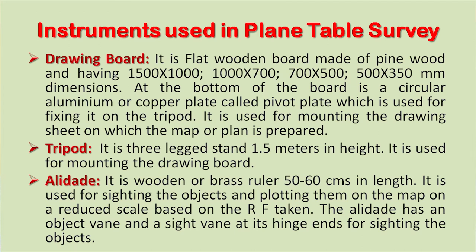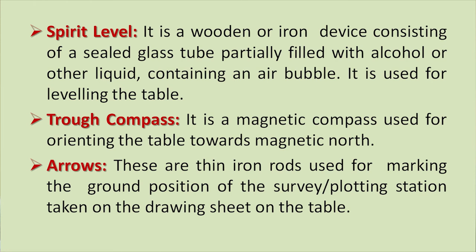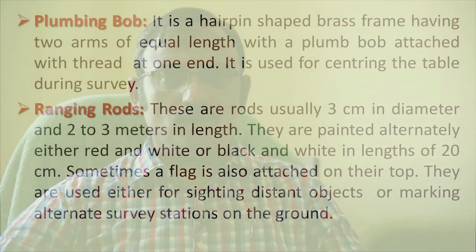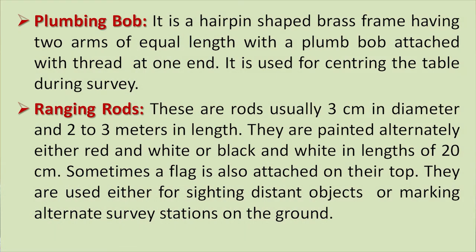The alidade has an object vane and a sight vane at its hinge ends for sighting the objects. Then we have the spirit level — a wooden or iron device consisting of a sealed glass tube partially filled with alcohol or other liquid containing an air bubble — used for leveling the table. Then the trough compass — a magnetic compass used for orienting the table towards magnetic north. Arrows are thin iron rods used for marking the ground position of the survey station or plotting station taken on the drawing sheet on the table.